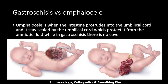Now let's compare gastroschisis against omphalocele. Omphalocele is another congenital abdominal wall defect in which the intestine protrudes into the umbilical cord and stays sealed by it. The intestine has a cover protecting it from the amniotic fluid and external environment. In gastroschisis, by contrast, there is no cover.